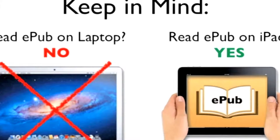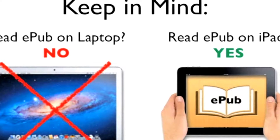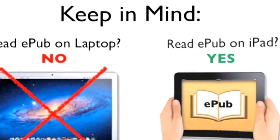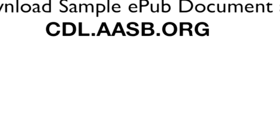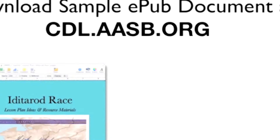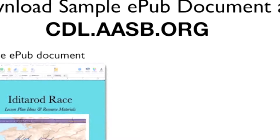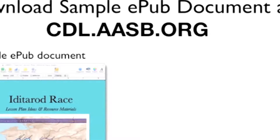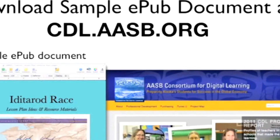To read your EPUB document, it first must be transferred to a mobile device such as an iPad. Then, using the iBooks app, you can read the EPUB file as a digital book on the iPad. A sample document is provided on the CDL website at the address on your screen that includes paragraph styles and other formatting attributes optimized for export to the EPUB format.